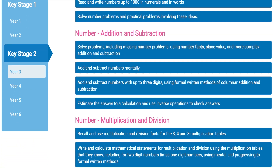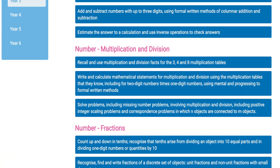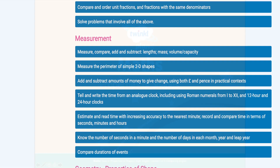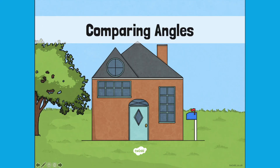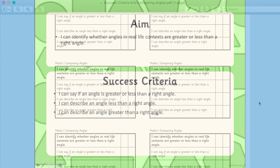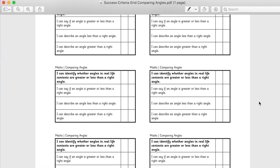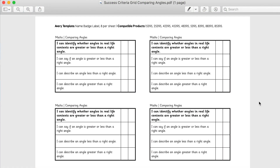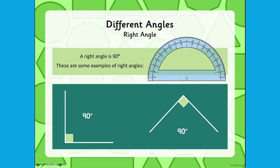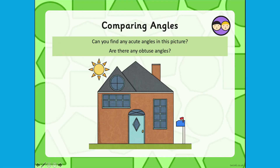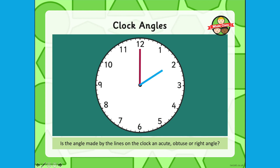The packs are filled with work based off the national curriculum guidelines and come with a great presentation which outlines the aims and success criteria. The success criteria also comes on an additional sheet in the pack, should you wish to print them off for your children. The PowerPoints are easy to follow and have examples to work through on the board or with an individual before moving on to independent tasks.